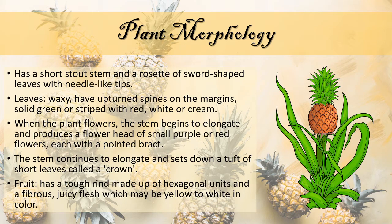For the plant morphology of pineapples, the pineapple plant has a short stout stem and a rosette of sword-shaped leaves with needle-like tips. The leaves are waxy, have upturned spines on the margin, and may be solid green or striped with red as seen in the picture on the right. It can also be striped with white or cream.